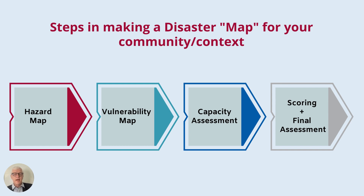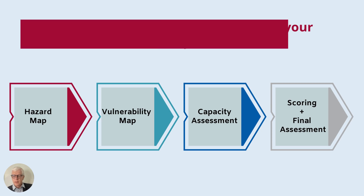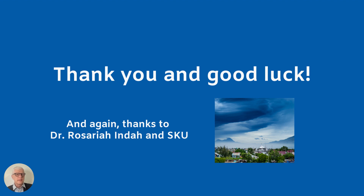Those are the steps in making a disaster map: conduct a hazard map, conduct a vulnerability map, do a capacity assessment, conduct scores for each of those areas, and conduct your final assessment to produce your map. I hope you found this presentation useful. I invite you to participate in the FM Pivot discussion board or reach out to the developers if you have further questions. The next section of this module will look at disaster planning — how do you actually develop a plan to prepare for the hazards you've identified? Thanks again to Dr. Rosaria Inda and the faculty at Siakuala University for providing the content.